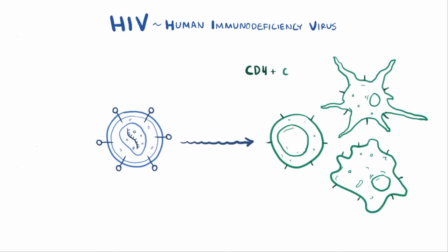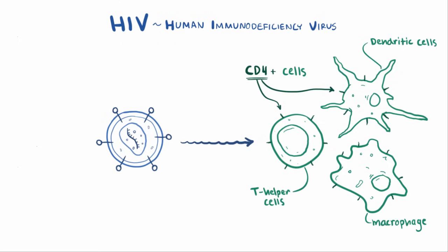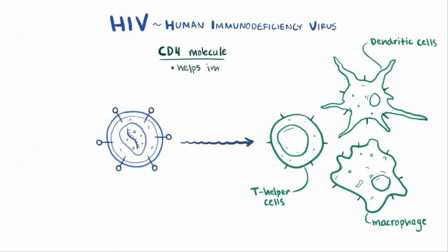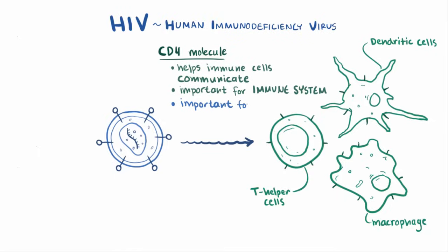HIV targets CD4+ cells, meaning cells that have the specific molecule called CD4 on their membrane. Macrophages, T helper cells, and dendritic cells are all involved in the immune response and all have CD4 molecules, therefore they can be targeted by HIV. The CD4 molecule helps these cells attach to and communicate with other immune cells, which is particularly important when launching attacks against foreign pathogens. So this molecule is pretty important for our immune system, but it's also extremely important for HIV.